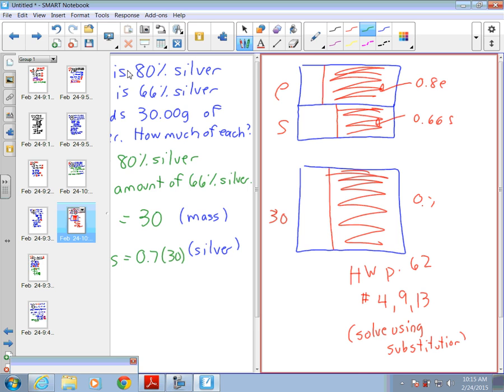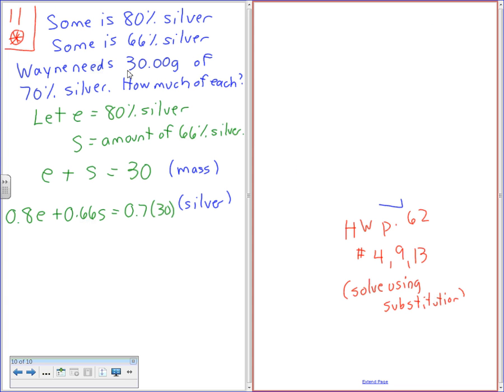Actually, let's do this. Okay, so here we go. Okay, so what I'm going to say is I'm going to solve for E here. I'm going to say E equals 30 minus S.